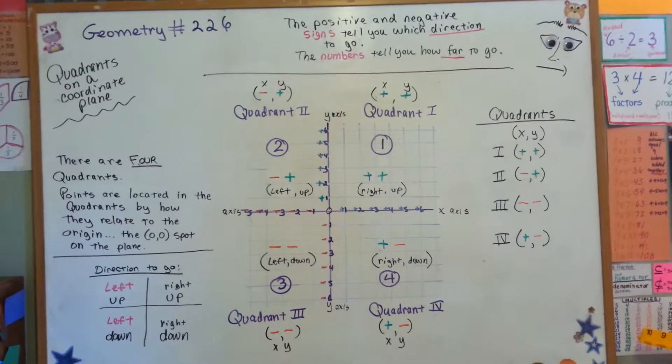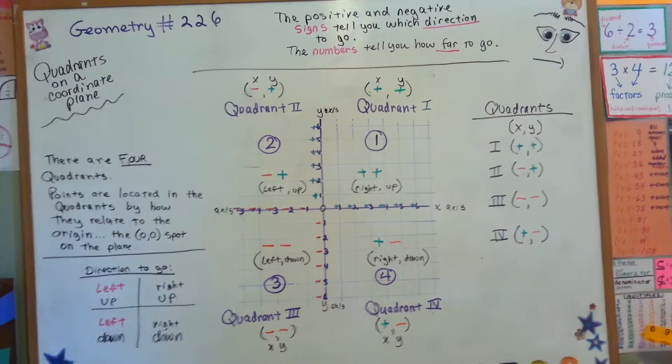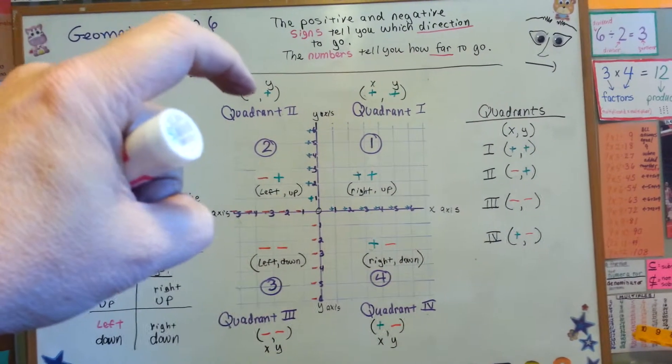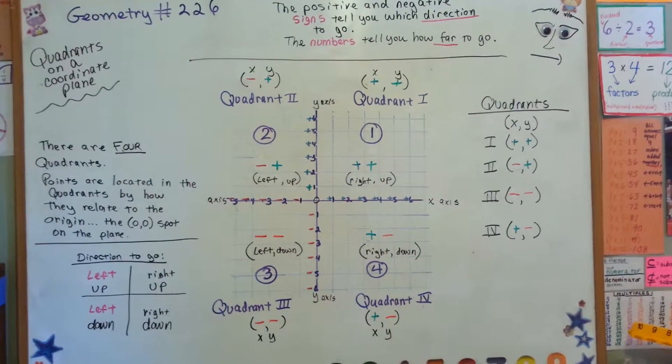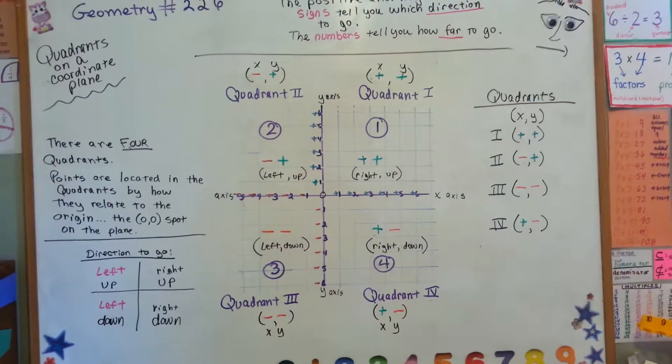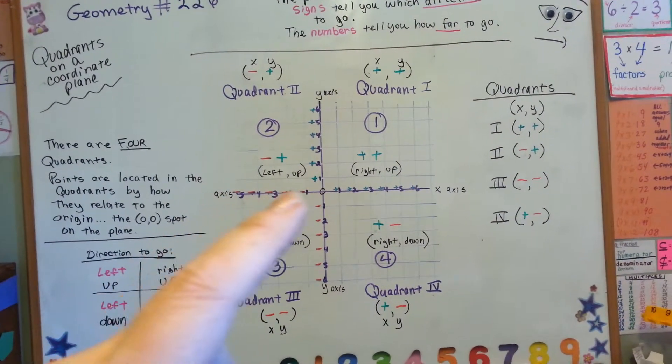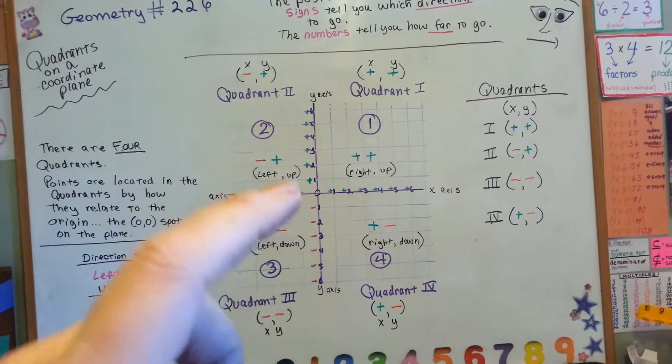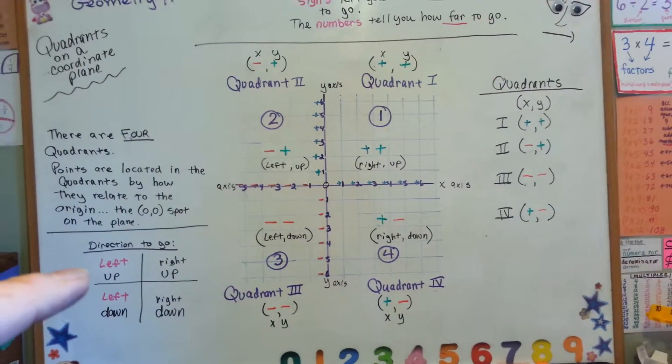Now, the positive and negative signs are important because they tell you which direction to go. The numbers that are going to be inside these parentheses with the positive and negative signs are going to tell you how far to go, and we'll do that in the next video. So with the negative signs here and negative signs down here, and these are positive signs and these are positive signs, it tells you the direction to go.